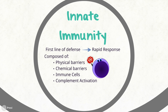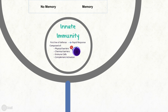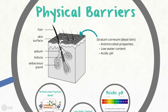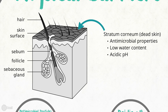The largest and most immediate component of the innate immune system is the skin, or epidermis. The epidermis acts as an impermeable physical barrier that prevents pathogens from entering our body. Most of these protective functions occur in the stratum corneum, the outermost layer of the skin, which is normally described as dead skin. The three main aspects of the epidermis that allow it to protect our bodies are its antimicrobial function, its lack of water, and its acidic pH.